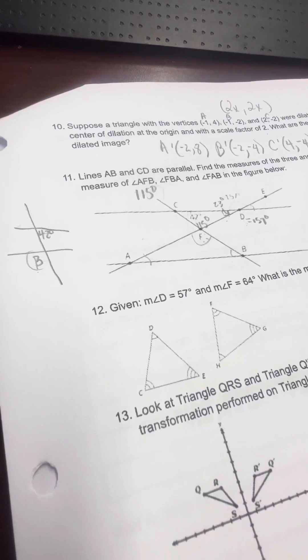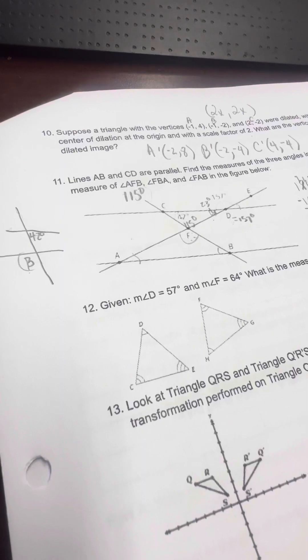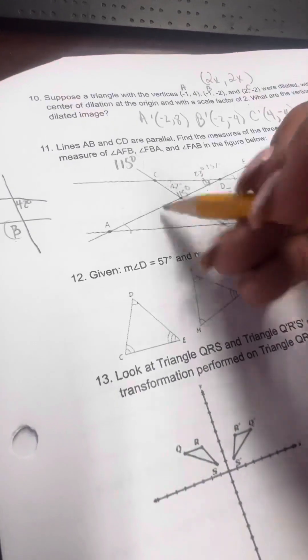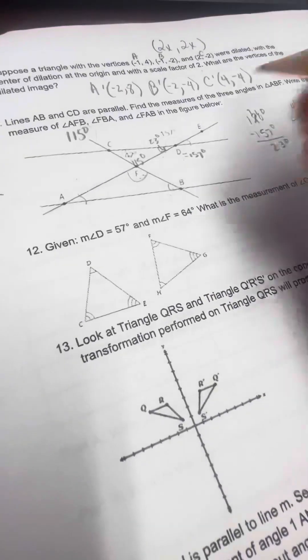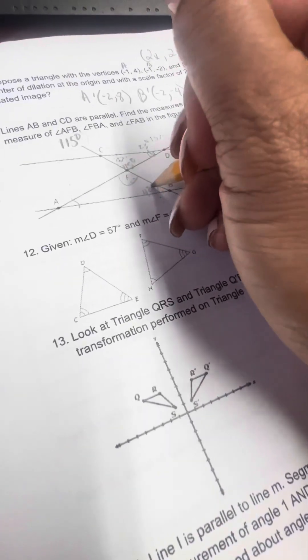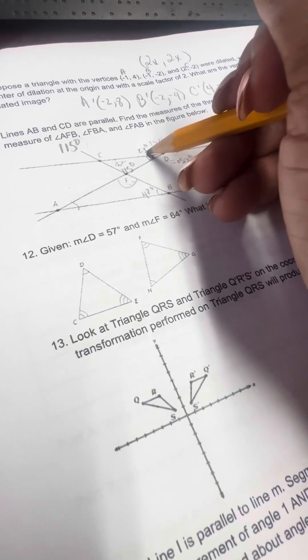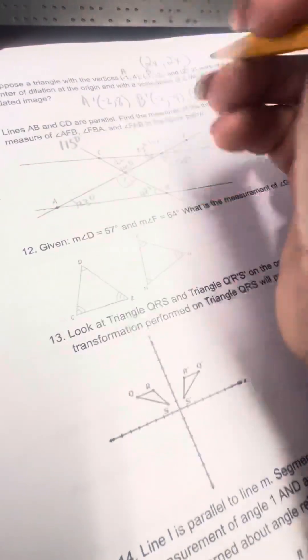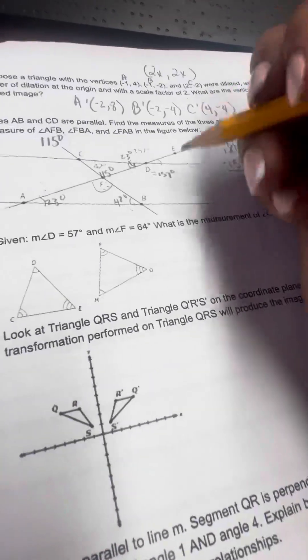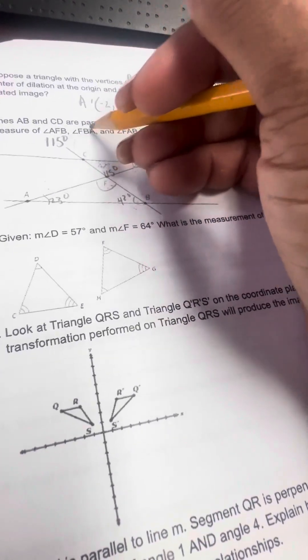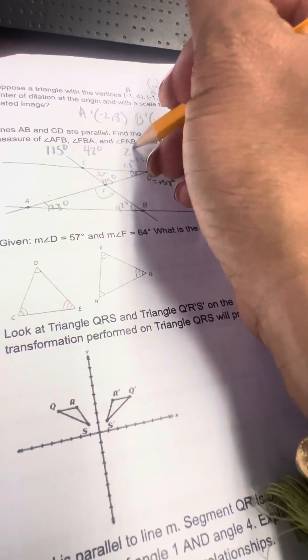Alternate interior, because they're inside of the parallel lines. So these two are inside of the parallel lines. So this is alternate interior, so this is 42 degrees. Now, I know 115 degrees and 42 degrees. The missing angle is 23 here, so that means this is 23. Why? Because these are alternate interior. They're inside the parallel lines. So the measure of FBA is 42, and FAB is 23 degrees.